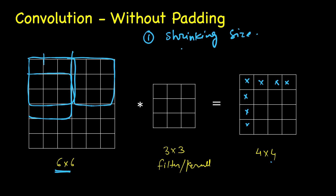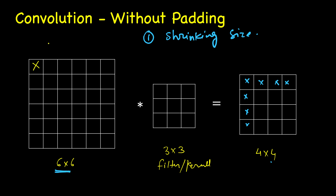The second issue: if you look at the yellow pixel in the top right corner, how many times is it used? Once we take convolution from the very first window, this pixel is used in the computation of that one output. Next time we shift the filter, it's not used, and similarly it will not be used in any other calculations. All corner pixels are used only once.